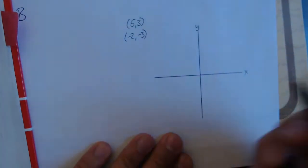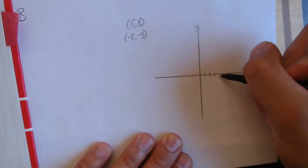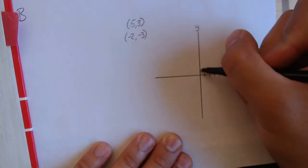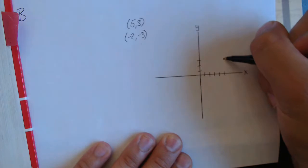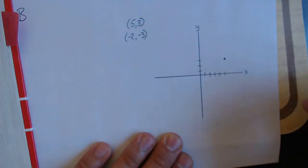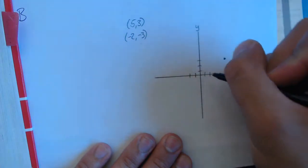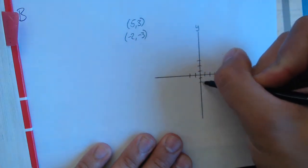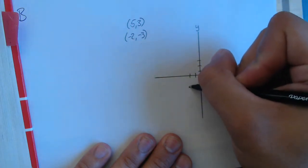We'll start with 5, 3. 1, 2, 3, 4, 5. And then 1, 2, 3. So that's our first point. Our second point, negative 2, negative 3. Negative 1, negative 2, negative 1, negative 2, negative 3. Oops, that was a little far. I'll make that into 4. So that is our second point.